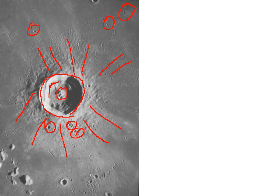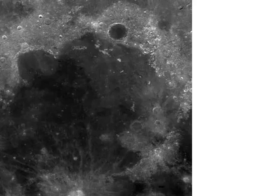By looking at the relative spacing of craters — which one was first, which one was second — it gives scientists an opportunity to estimate ages. As we get to larger and larger craters,